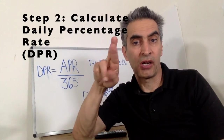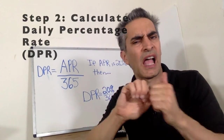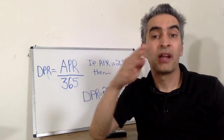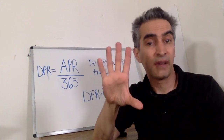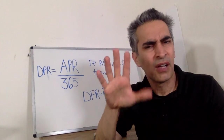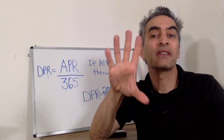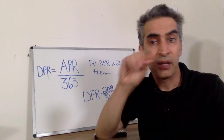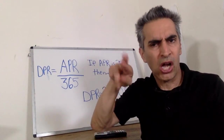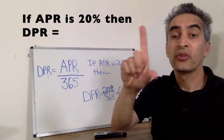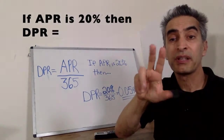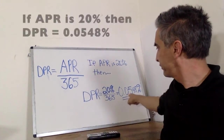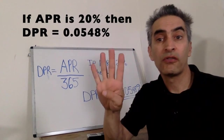Second, you have to calculate your daily percentage rate, or DPR. To calculate your DPR, you take the APR and divide it by 365, because there are 365 days in each year. For example, if your APR equals 20%, then your DPR equals 20% divided by 365, which equals 0.0548%.